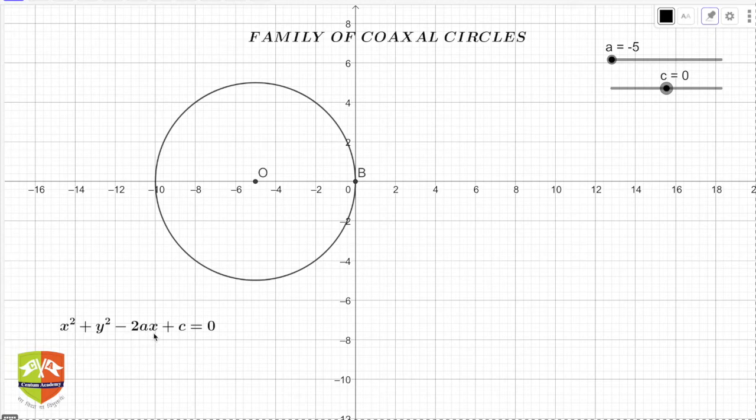The center O lies on the x-axis, and depending upon the value of c you can determine the radius of the family of circles. The center has to be on one axis and radius could be anything. There are two values here, a and c, and we will see different kinds of coaxial circles as I change these values.